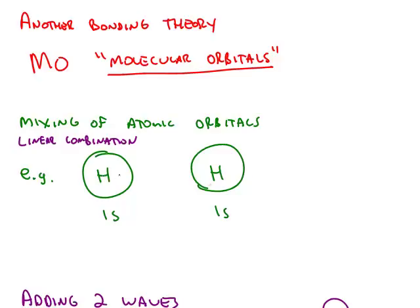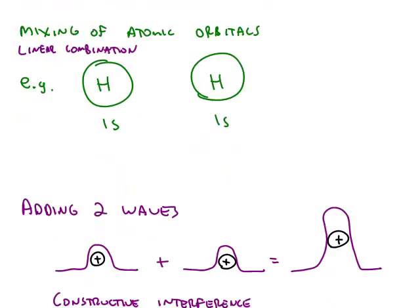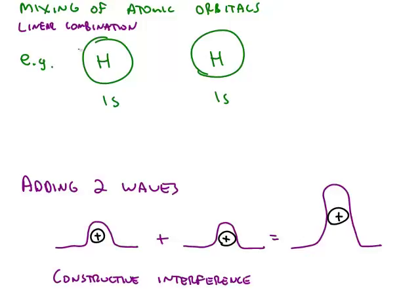For example, two hydrogen atoms can combine to form the diatomic hydrogen molecule. Each hydrogen atom has its electron in a 1s orbital in its ground state. Remember, the orbitals are related to wave functions, and we can add waves together.